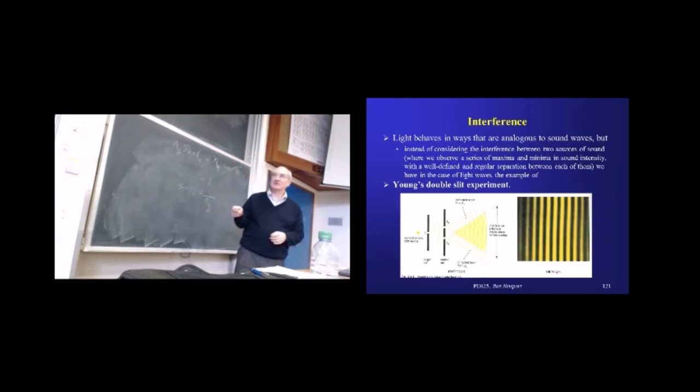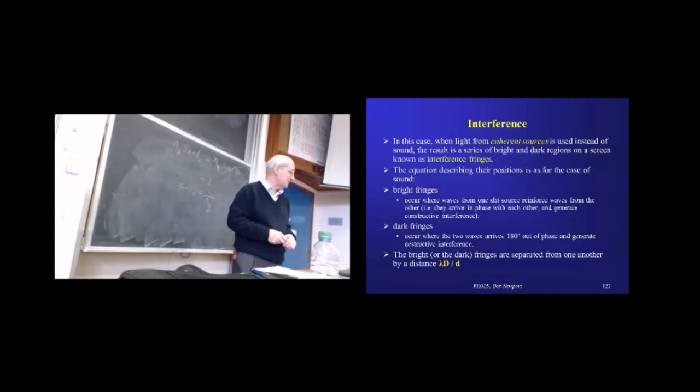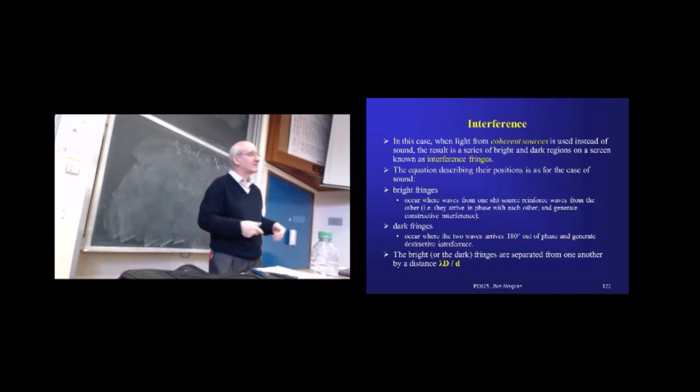Instead of sound. And these are going to be referred to as fringes. So we have a bright fringe, a dark fringe, bright fringe, and so on. So in the context of light, that is the language that will be used. So we've got coherent sources, in other words, a constant phase relationship. And we're going to produce then a pattern of bright and dark interference fringes on the other side. And the bright fringes are occurring when we have constructive interference. The dark fringes are happening when we have destructive interference.